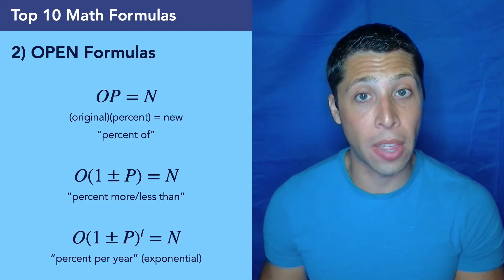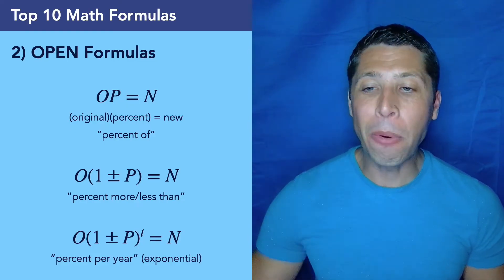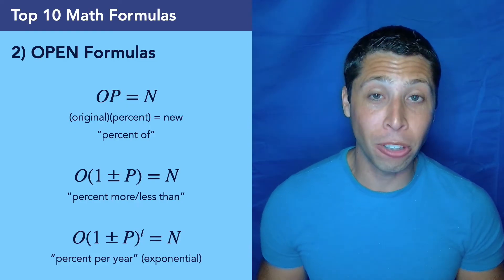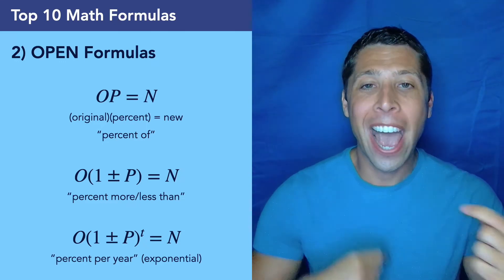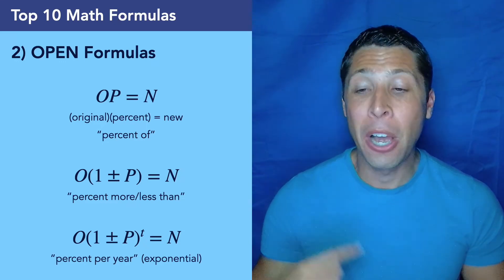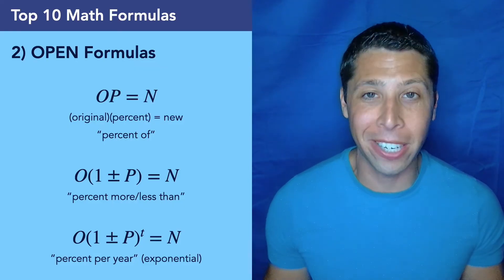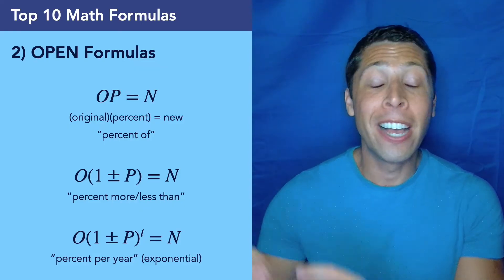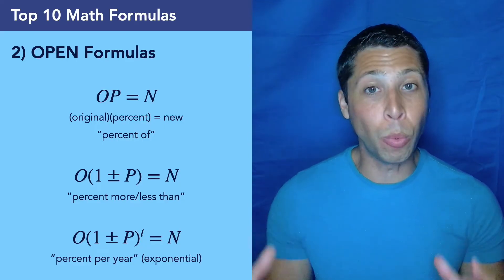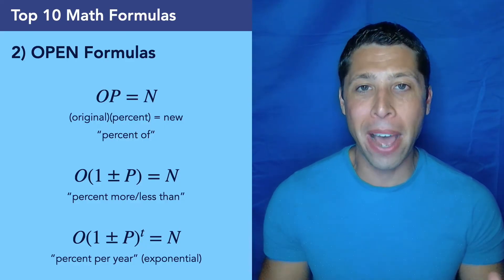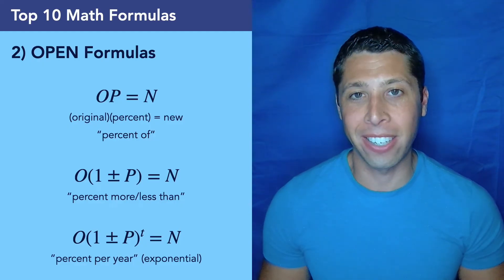And then the OPEN formula can also work when we have exponential equations, because we can just put a little T at the top of the percentage, and now we can take a percentage multiple times over multiple years, months, days, weeks, whatever it is, and that is a connection to these other percentage things. So this is again, kind of like three formulas in one, and it's really helpful because the less we have to memorize, the better. And if we can link all these percentage ideas together, then hopefully we'll be able to avoid the traps on all three types of questions.